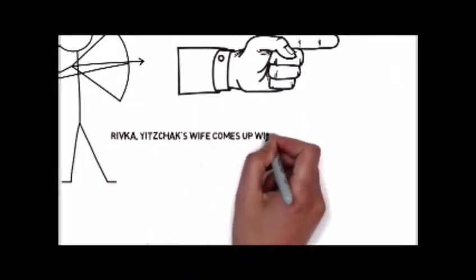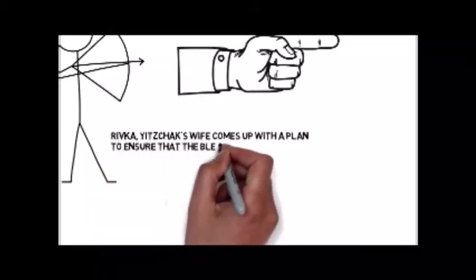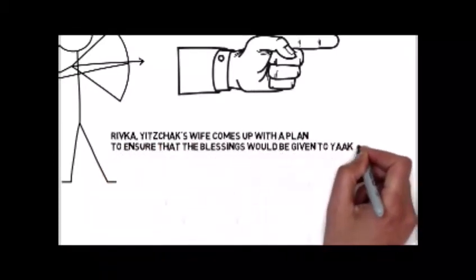So Rivka, Yitzchak's wife, comes up with a plan to ensure that the blessings would be given to the right candidate, that being her youngest son, Yaakov.